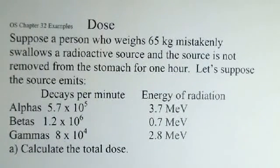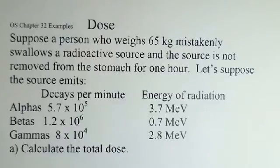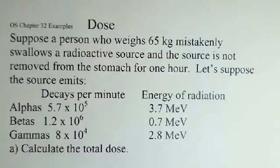Another example of calculating absorbed dose and effective dose. A hypothetical problem: we have a 65-kilogram person who swallows a radioactive source, and it takes an hour until doctors remove it from their stomach. We assume there are alphas, betas, and gammas exiting that source. The decays per minute for each are listed, along with the energy: each alpha carries 3.7 MeV, each beta 0.7 MeV, and each gamma 2.8 MeV.